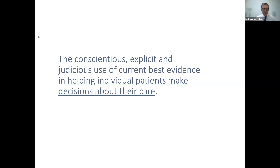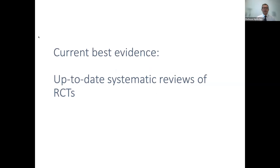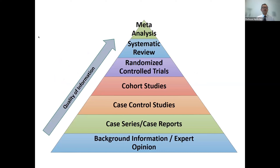So if that's what evidence-based medical practice is about, where do we find current best evidence? The short answer is in up-to-date systematic reviews of randomized controlled trials. There is something called the evidence pyramid, where the quality of information on which to make a medical judgment increases as you go towards the top. At the bottom we have expert opinion, then case reports or case-control studies, then randomized controlled trials — something Cochrane talked about — and then systematic reviews and meta-analyses above that.